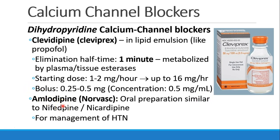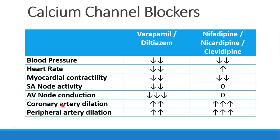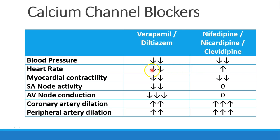Amlodipine, called Norvasc, is a very common oral preparation, pretty similar to nifedipine or nicardipine, again used for the management of hypertension. There's a chart that categorizes these drugs: verapamil and diltiazem in one category — more of a heart rate category — and nifedipine, nicardipine, and clevidipine in the vascular category. They have similar effects on blood pressure but different effects on heart rate: verapamil and diltiazem are designed to decrease heart rate, whereas the others have no effect on heart rate, so you may see some reflex tachycardia instead.